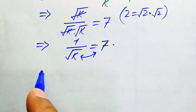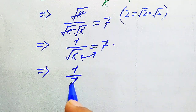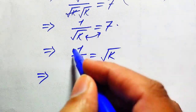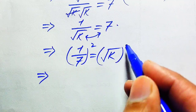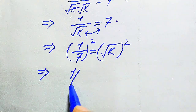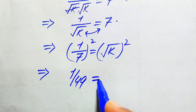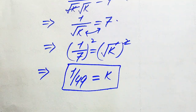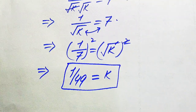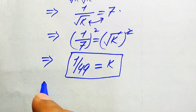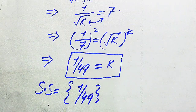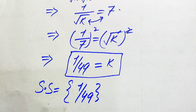For the values of k, we interchange: moving square root of k to the right and 7 to the left gives 1/7 equals square root of k. Taking squaring on both sides: 1 squared over 7 squared gives k equals 1/49. This confirms the value from the first method. Since we already verified k equals 1/49 satisfies the equation, this is the only solution. Thank you for watching — please subscribe for more videos.